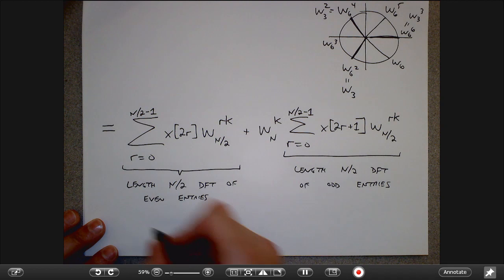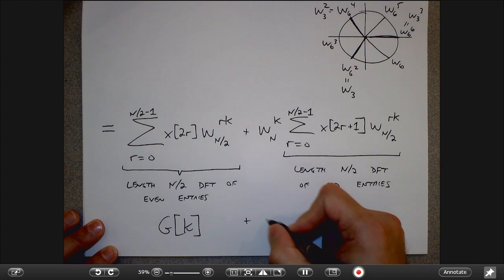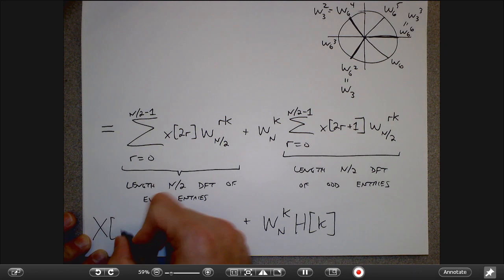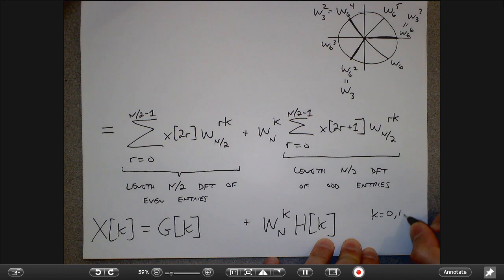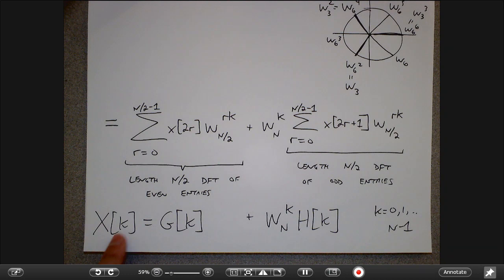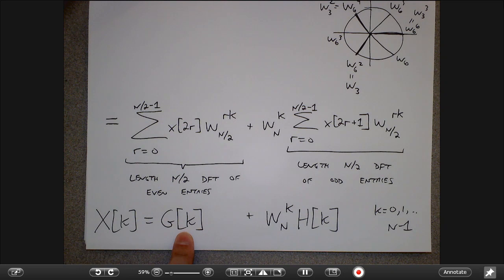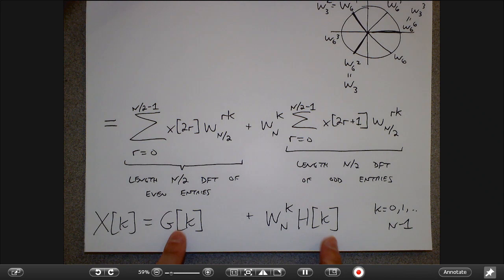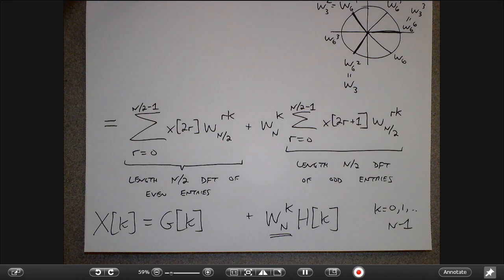In this way, I'm making this look exactly like two shorter DFTs. The first sum is a length N/2 DFT of the even entries, and the second is a length N/2 DFT of the odd entries. I can write this compactly as X[K] = G[K] + W_N to the K times H[K], where G is the DFT of the even entries and H is the DFT of the odd entries. For a length 6 DFT, that means I compute a length 3 DFT and another length 3 DFT, then combine the elements in a specific way.